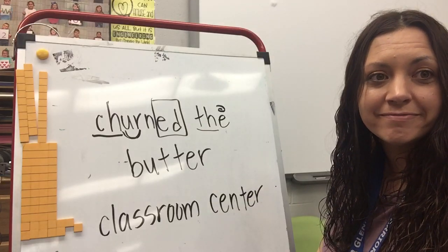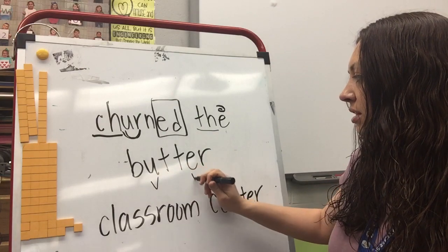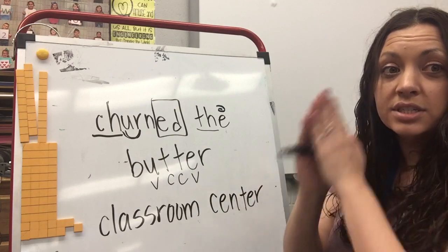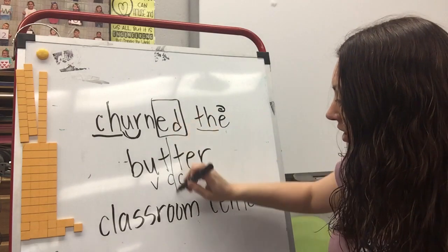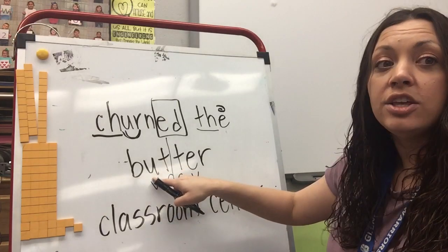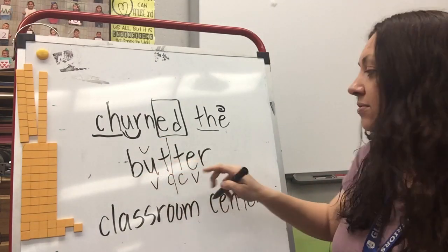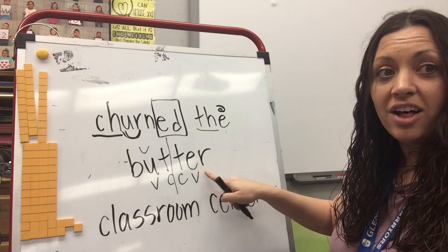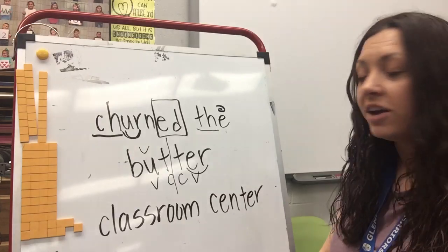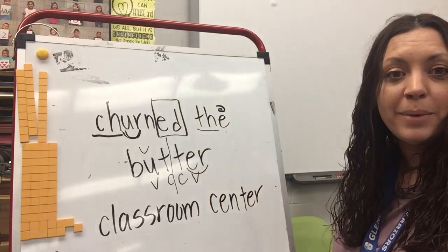What about our next word? Where are my vowels? I've got more than one vowel — a U and an E — with a double consonant in the middle. What do I do if there's a double consonant? I split it straight down the middle. Now it's just like a CVC word, so that vowel is short: B-U-T — but. And over here I've got a vowel in front of a consonant — an E and an R — so I connect them with an arc: T-er. So: but-ter — churned the butter. Very good!